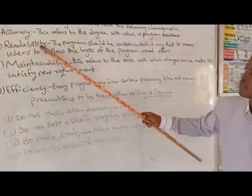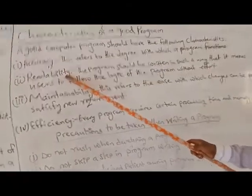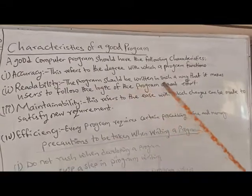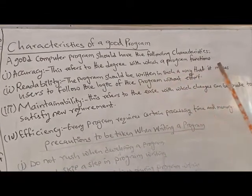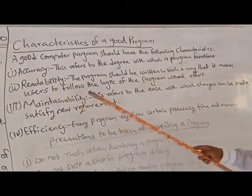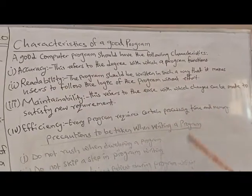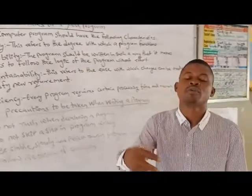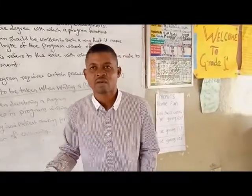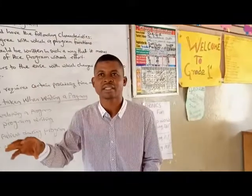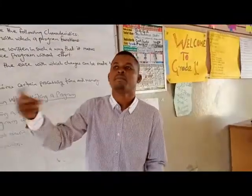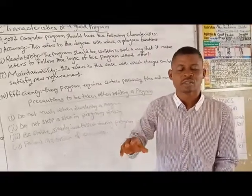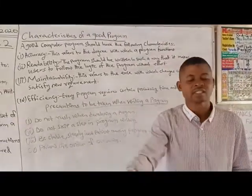The second characteristic of a good program is readability. The program should be written in such a way that users can follow the logic without effort. A child in primary school will be able to use Zuma because the logic is clear — once you hit the balls and break their colors, it gives you other balls, or until you completely destroy the balls it promotes you to the next stage.